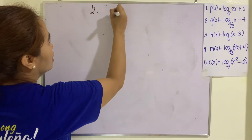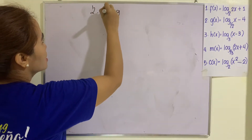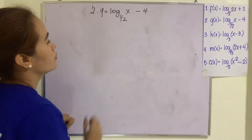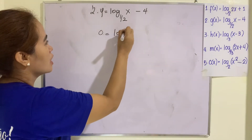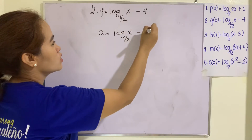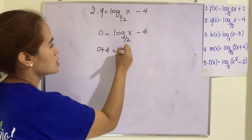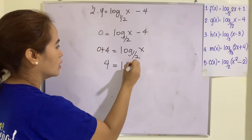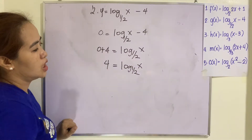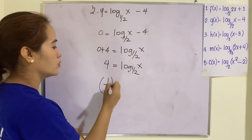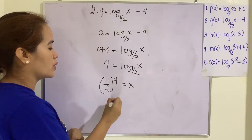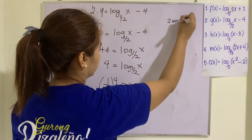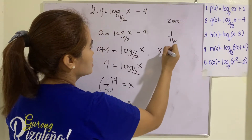Number 2: y equals log of x to the base 1/2 minus 4. Setting y to zero: 0 equals log of x to the base 1/2 minus 4, so 4 equals log of x to the base 1/2. Changing to exponential form: (1/2) raised to 4 equals x, and (1/2)⁴ equals 1/16. So the zero is x equals 1/16.